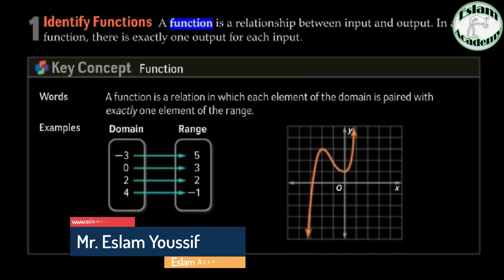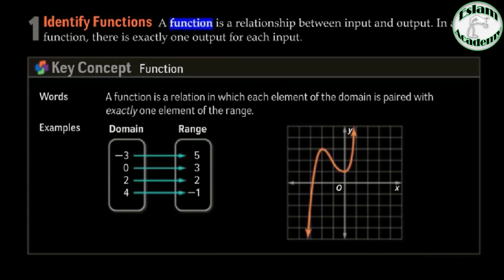Number 1: what is the meaning of the function? The function is the relation between the input and output. In a function there is exactly one output for each input. We will use all of the input of the domain and there is only one connection between the domain and range. That is the meaning of the function.